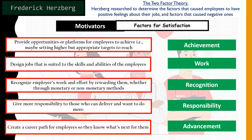For responsibility, delegate more responsibilities to those who can deliver and want to do more, making them feel empowered. For advancement, showing employees a clear career path and promotion opportunities helps them feel happy knowing what's ahead. These five factors of satisfaction are called motivators because they evoke positive feelings. They surround the job itself — enriching work, recognition, responsibility, advancement, and achievement — and in the long run may relate to a sense of motivation.